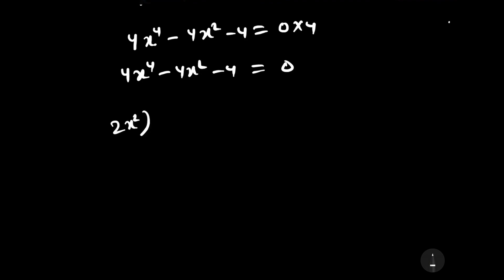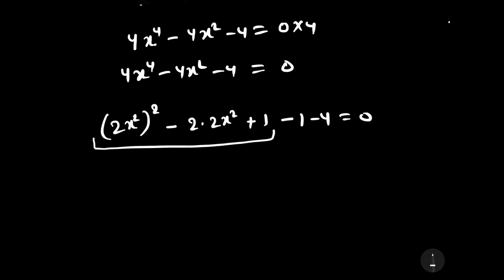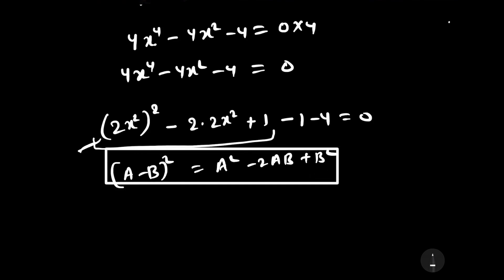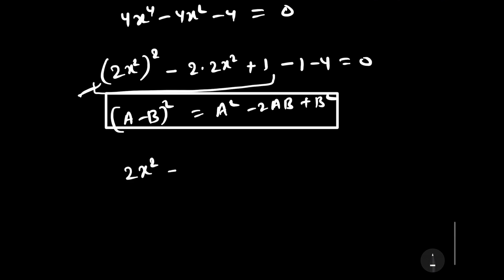We rewrite this as (2x squared) squared minus 2 times 2x squared times 1 plus 1 minus 1 minus 4 equals 0. Using the identity (a minus b) squared equals a squared minus 2ab plus b squared, this becomes (2x squared minus 1) squared minus 5 equals 0.